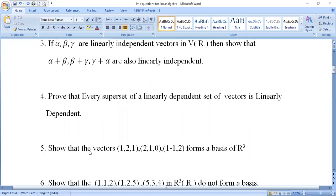Fifth question: Show that the vectors (1, 2, 1), (2, 1, 0), (1, -1, 2) form a basis of R³. To show basis, we need to prove they are linearly independent and that their span equals R³.